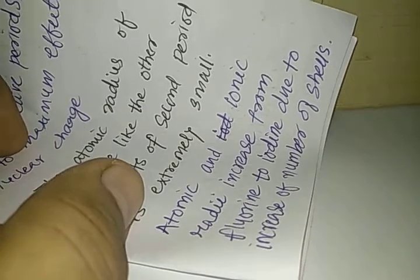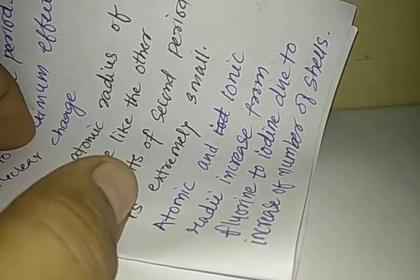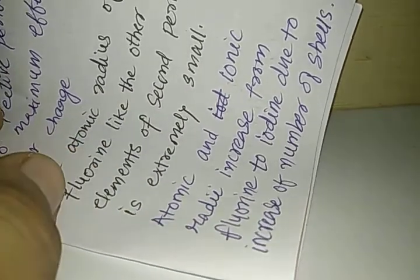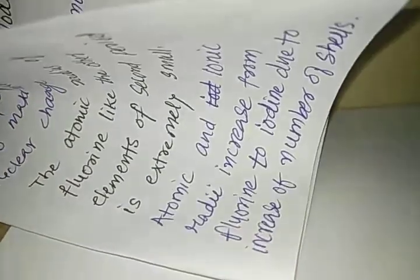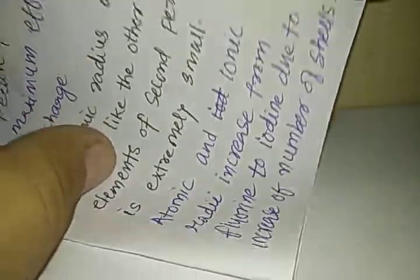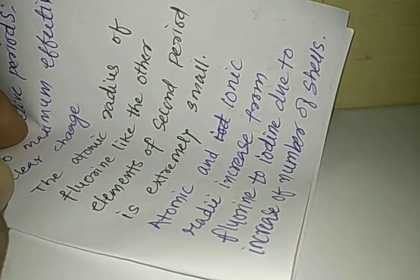Atomic and ionic radii increase from fluorine to iodine due to increase of number of shells. As we go down the group, the number of shells also increases, and that is why the atomic and ionic radii also increase. I hope my dear students are enjoying your studies. Happy learning.